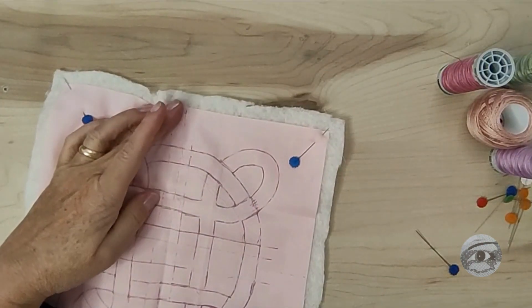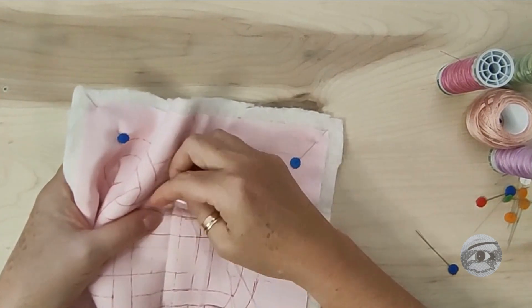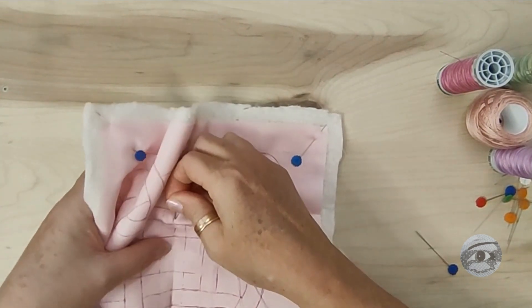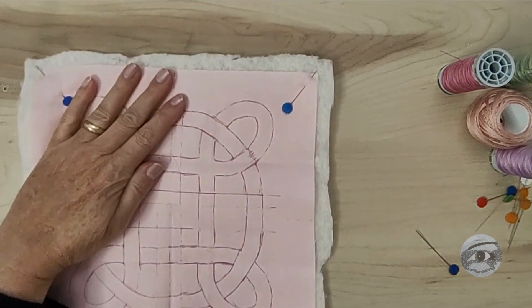The batting and backing should be larger than the quilt top. Initially, I secure them with pins, and then I do a basting stitch to join the three pieces.